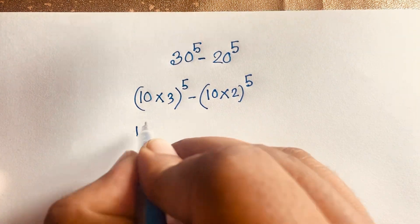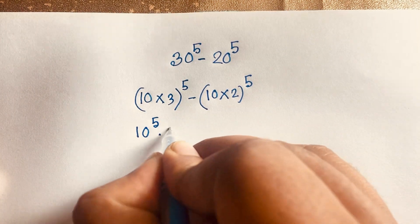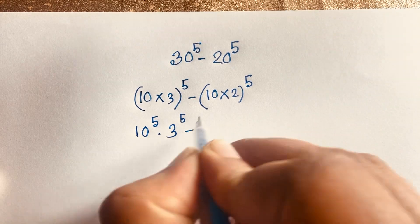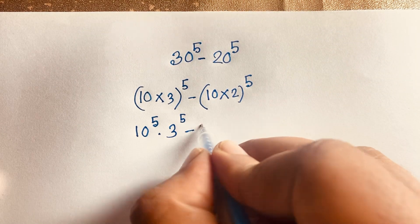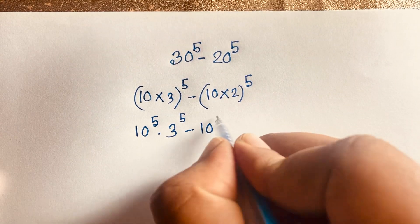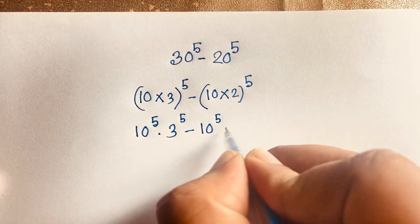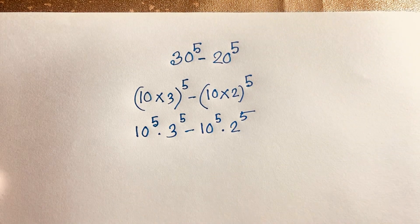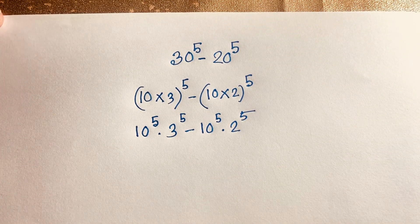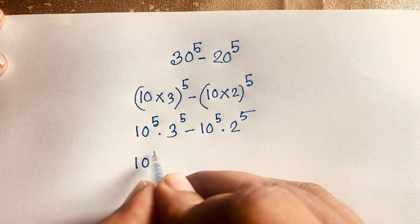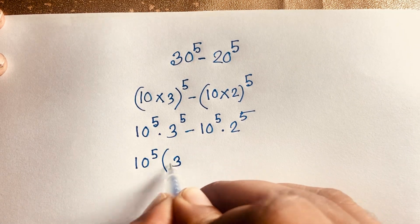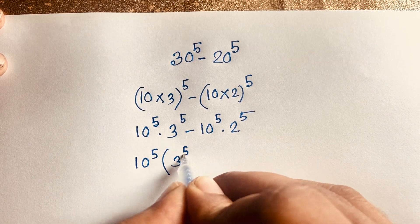Now in this expression, according to exponential law, here is 10 to the power 5 times 3 to the power 5, minus 10 to the power 5 times 2 to the power 5. Now here 10 to the power 5 is common, so we factor it out: 10 to the power 5 times (3 to the power 5 minus 2 to the power 5).